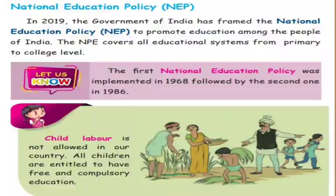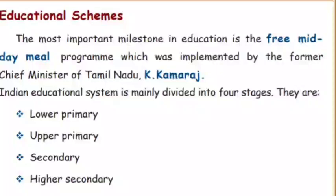RTE's main aim is to promote free and compulsory education for children between 6 to 14 years of age, while the main theme of NEP is to promote education among all people of India. The first National Education Policy was implemented in 1968, followed by the second in 1986. According to NEP, no child below 18 years of age should be allowed to work in private concerns — child labor is not allowed in our country. Every child below 18 years of age is entitled to free and compulsory education under RTE and NEP.